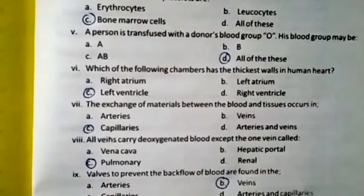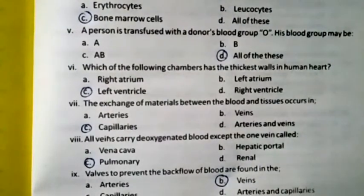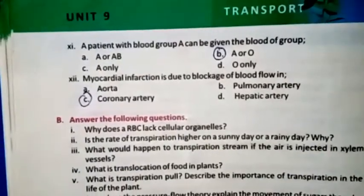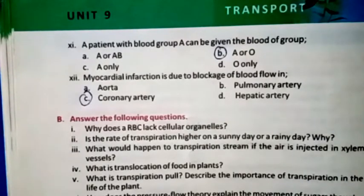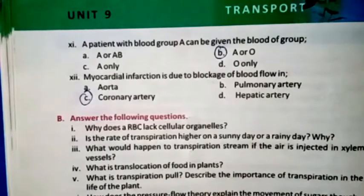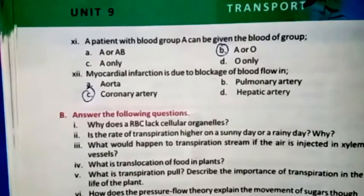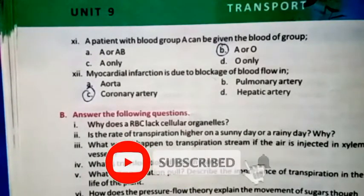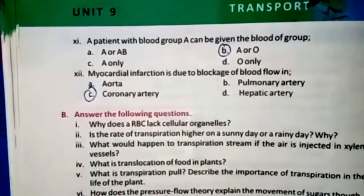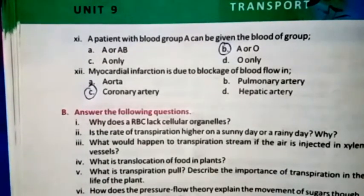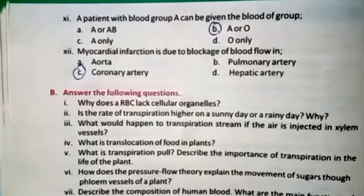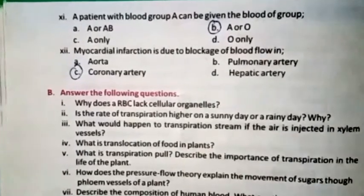Which cells of the blood are responsible for clotting — platelets, erythrocytes, neutrophils, or basophils? The right option is platelets. Question eleven: A patient with blood group A can be given blood of group A and O only. Question twelve: Myocardial infarction is due to blockage of blood flow in the aorta, pulmonary artery, coronary artery, or hepatic artery. The right option is C — coronary artery.